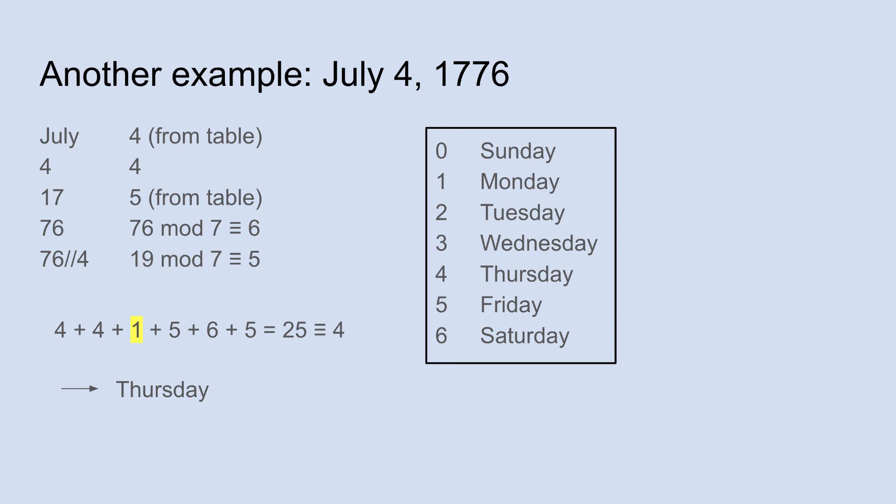Adding up that list of numbers can be made easier — you don't have to wait until the end to do mod 7. At any step of the way you can reduce. For instance, 4 plus 4 is 8, and 8 mod 7 is just 1. So the running total becomes 1 plus 1 plus 5, which is 7, and that's just 0. Then we only have to add the last two numbers, 6 and 5, which give us 11. Since 11 is 4 more than 7, 11 mod 7 is 4 — a Thursday.